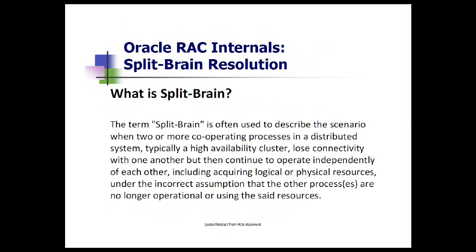When you have a two-node cluster and split-brain occurs, the first node that comes up will remain and the second node will be rebooted. If you have more than two nodes in a cluster and only a small subset of nodes cannot see the other part, the larger portion of the cluster nodes will remain. The subset of nodes that cannot see the others will be evicted.